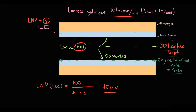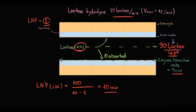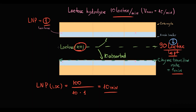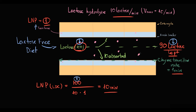Treatment includes a lactose-free diet and intake of lactase pills. The principle is simple: to decrease the amount of undigested lactose molecules, we have two options — we can decrease lactose intake through a lactose-free diet, or we can artificially increase the amount of enzyme by taking lactase pills.